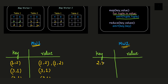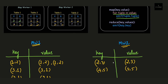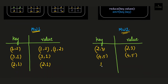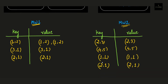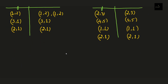Moving to map worker 2: record 2,3 gives key 2,3 and value 2,3. Next, 4,5 gives key 4,5 and value 4,5. Then 1,1 gives key 1,1 and value 1,1. Finally, 2,1 gives key 2,1 and value 2,1. Now we are done writing all the key-value pairs from the records.